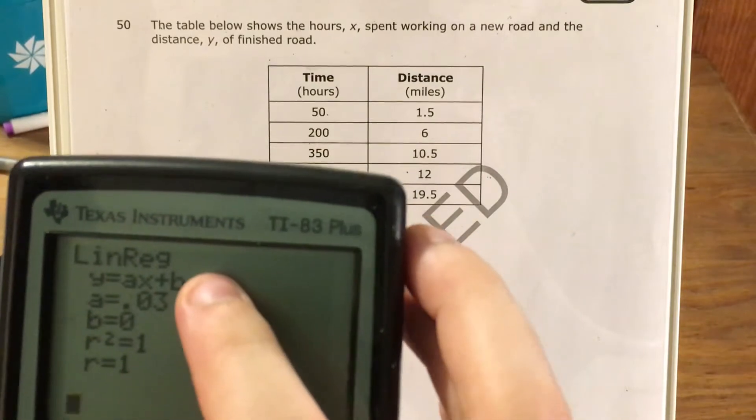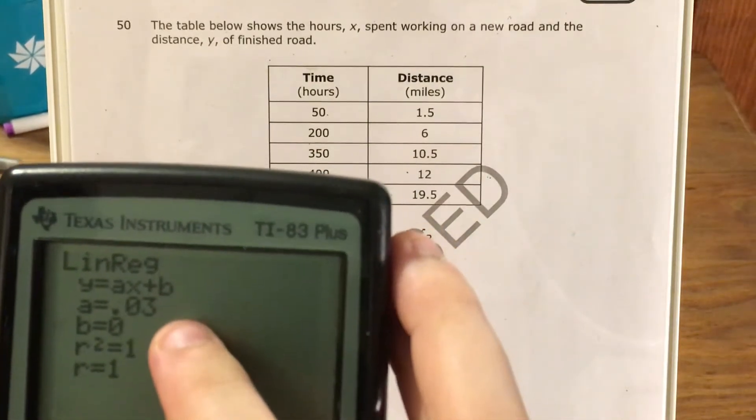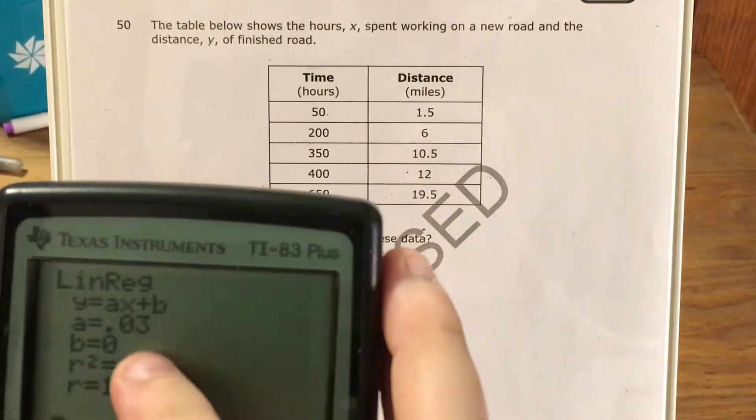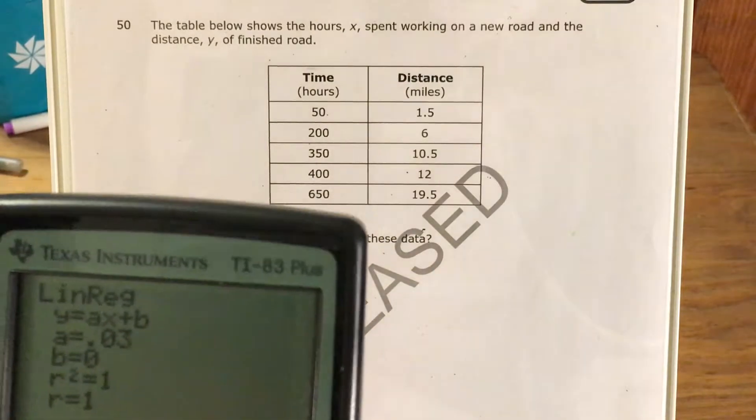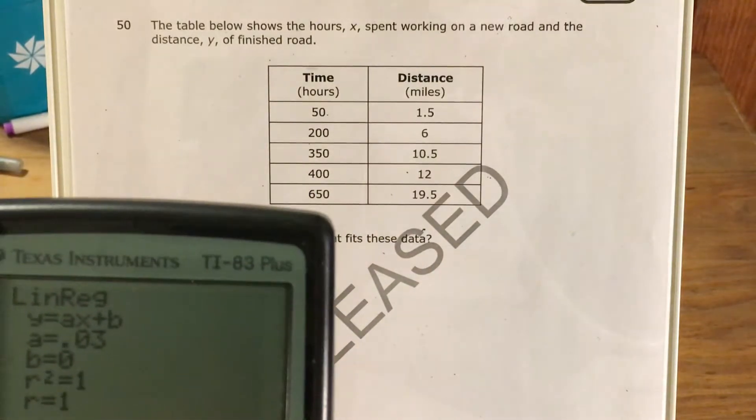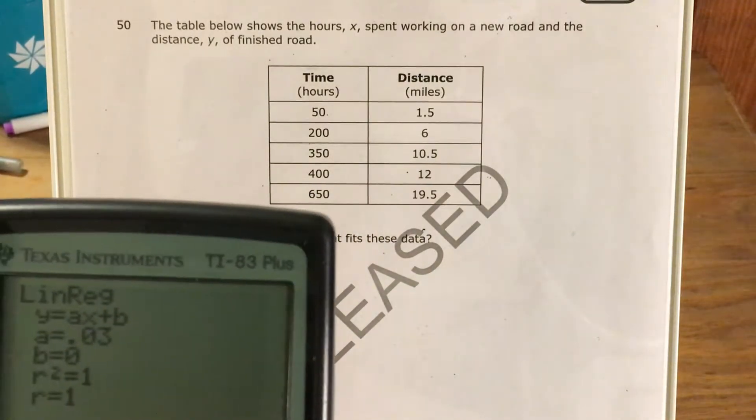Press enter, and it actually gives me the slope of the line that fits this data, and these two numbers being 1 just means that all the points are exactly right on a line, there's no fluctuations of any kind.